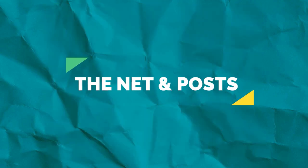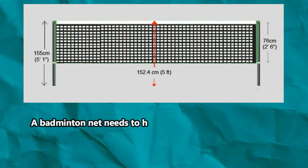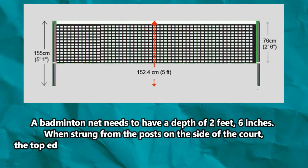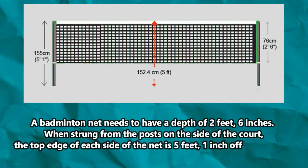The net and posts: A badminton net needs to have a depth of two feet and six inches when strung from the posts on the side of the court. The top edge of each side of the net is five feet and one inch off the ground.